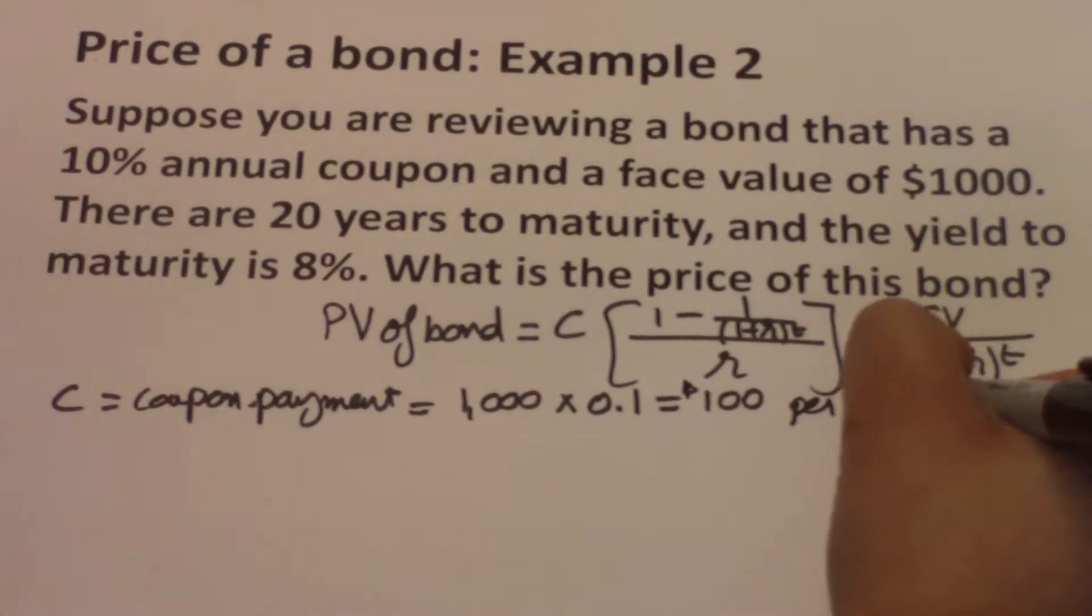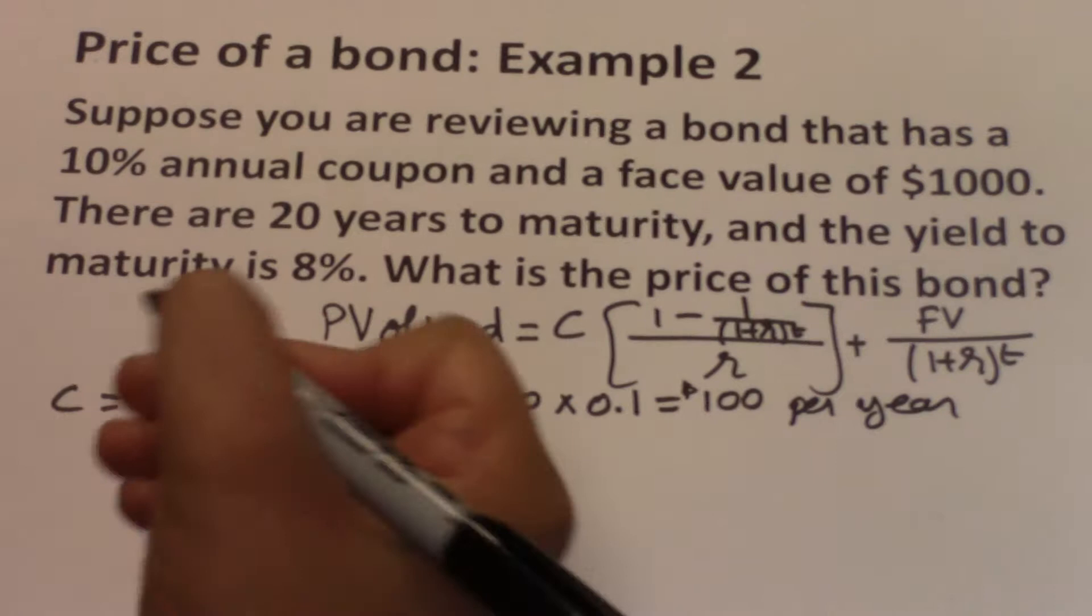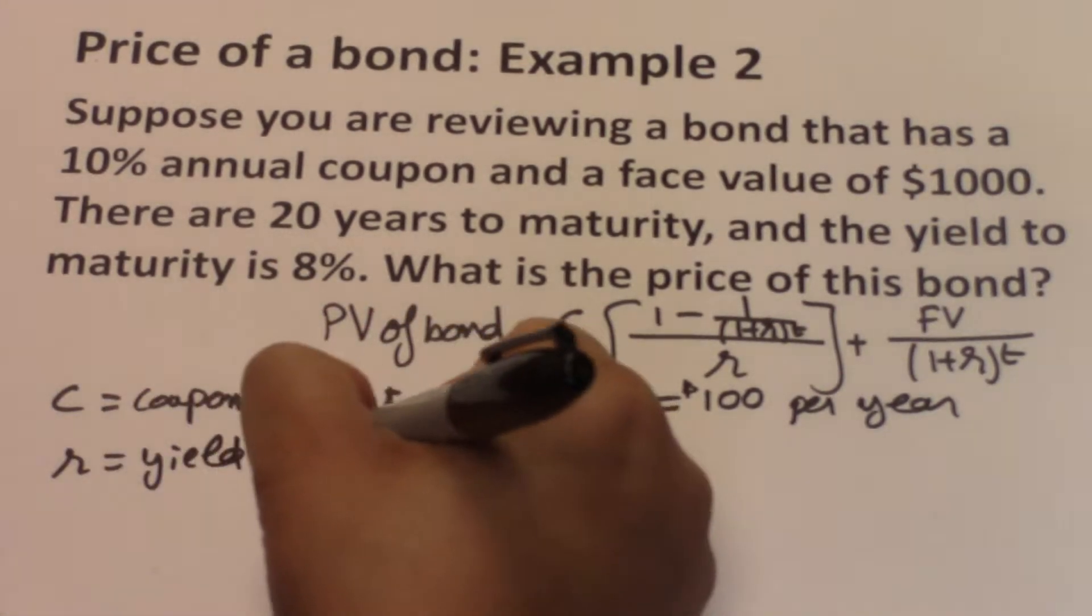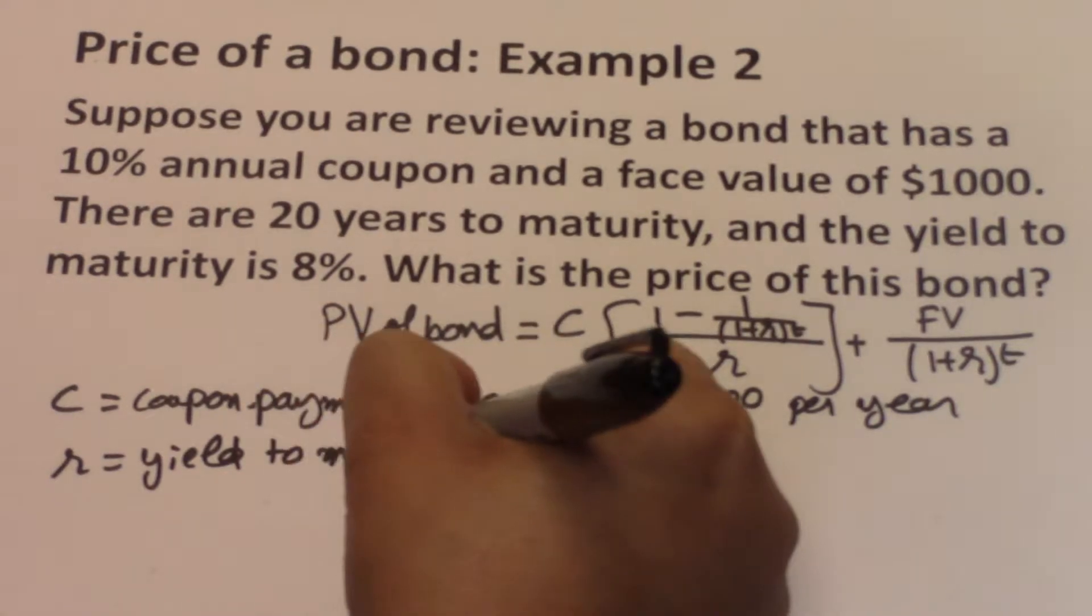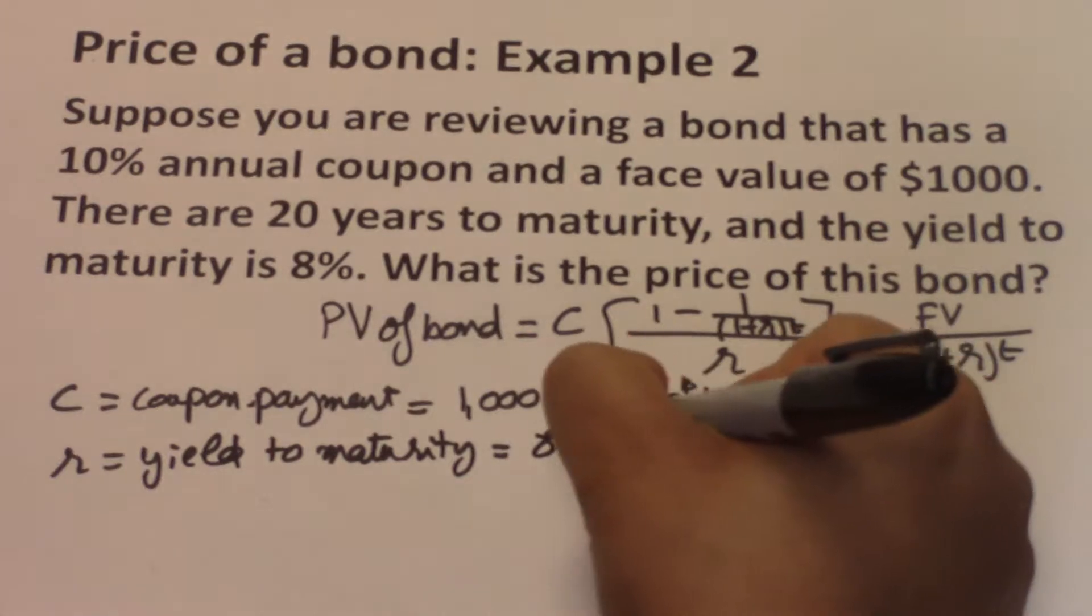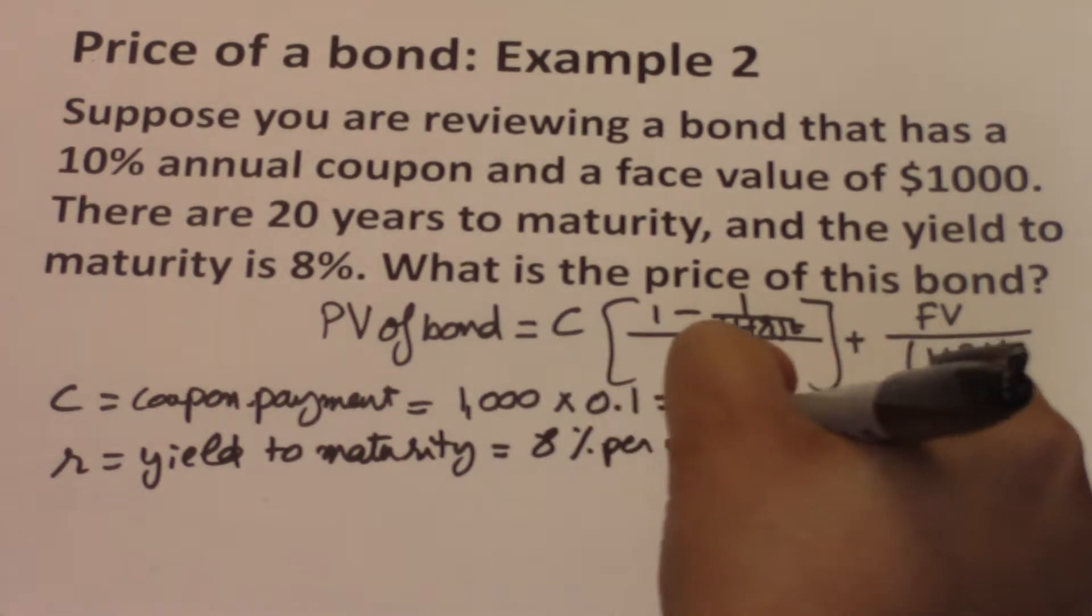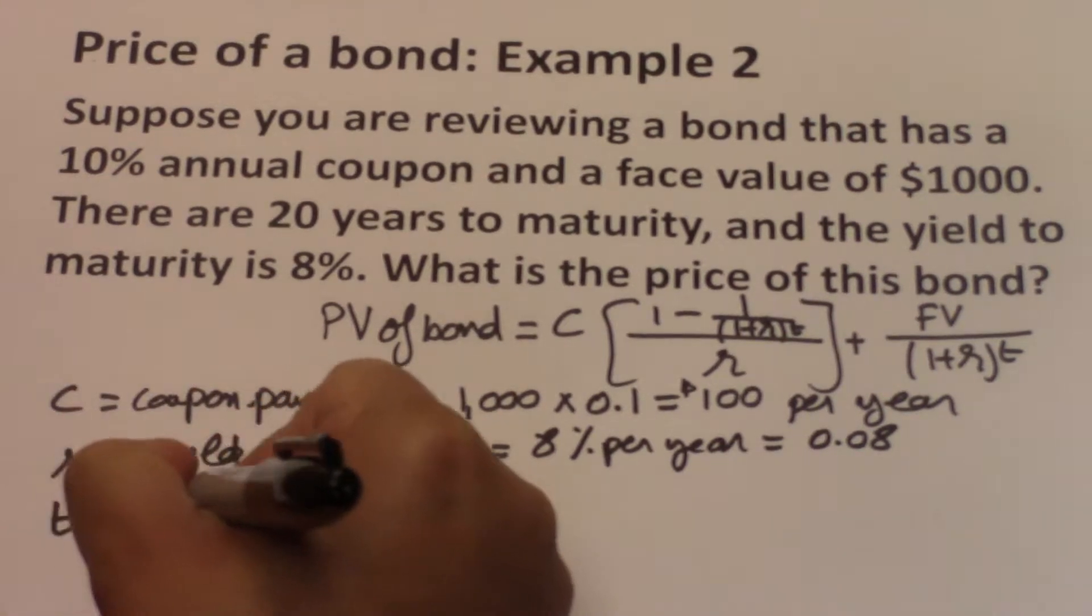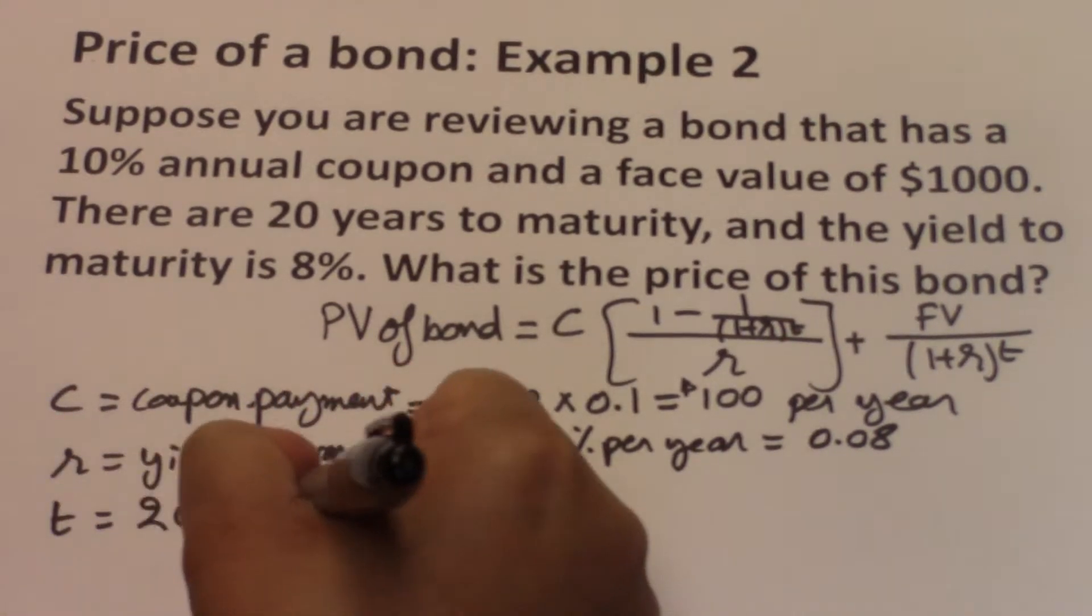So r and t should also have a yearly frequency. r is the yield to maturity, and the problem is telling us that the yield to maturity is 8%, so 8% per year or 0.08. t is the time to maturity. In this case, it is 20 years.